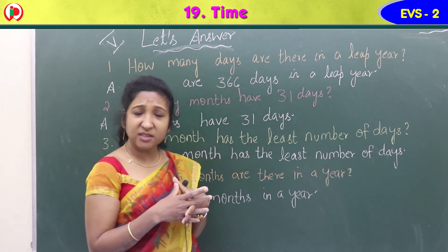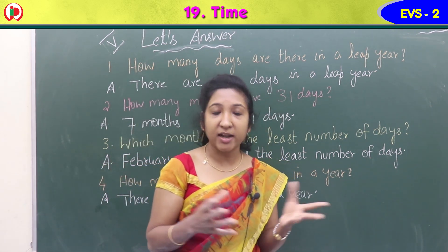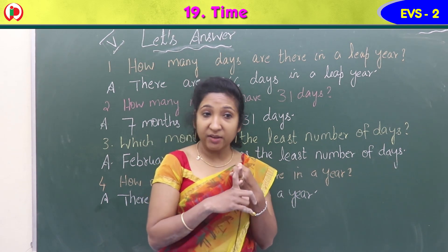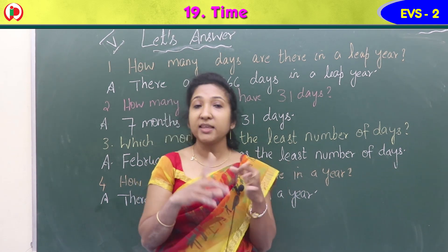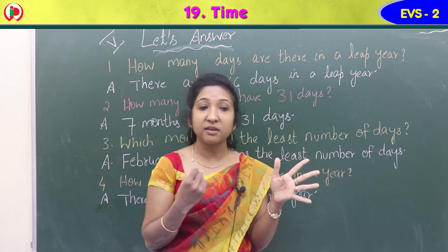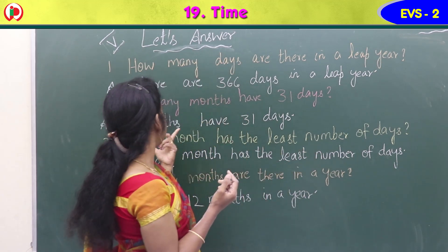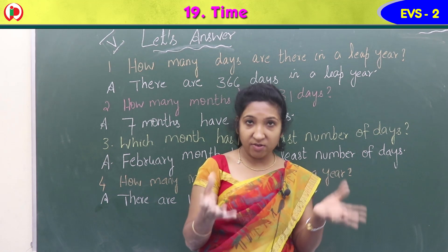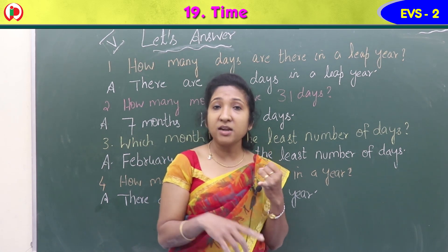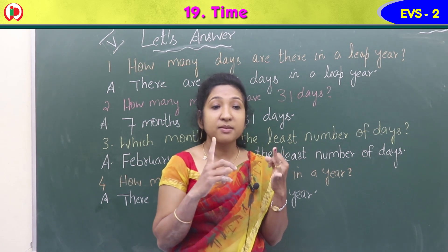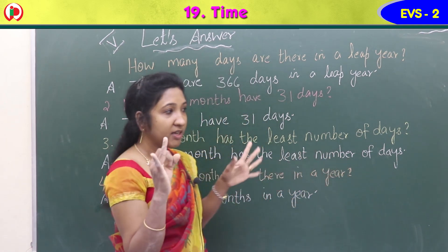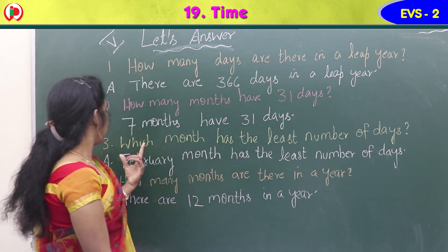Let's count: January has 31, February has 28 or 29, March 31, April 30, May 31, June 30, July 31, August 31, September 30, October 31, November 30, December 31. So January, March, May, July, August, October, and December — that's seven months with 31 days.